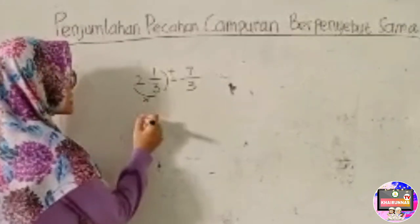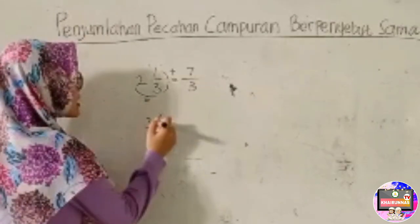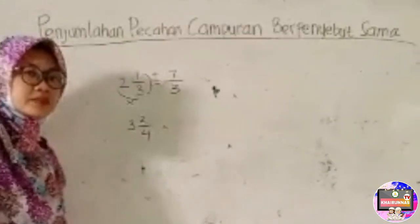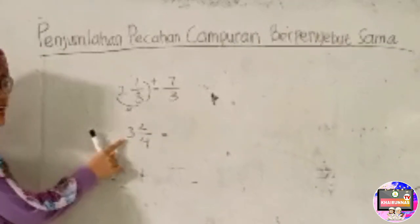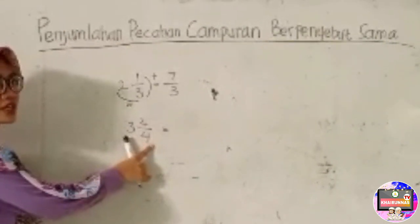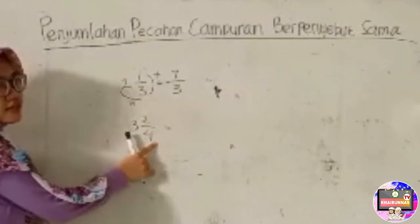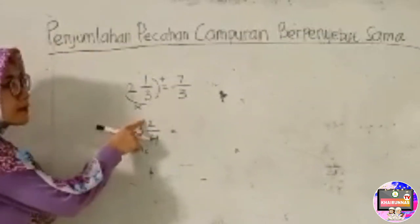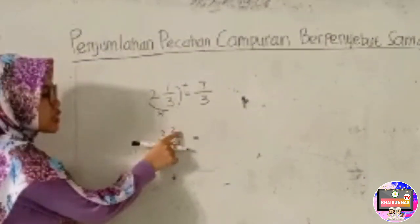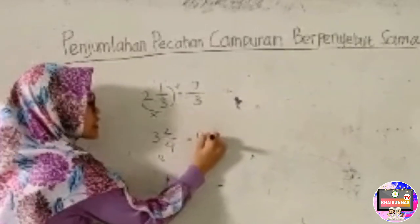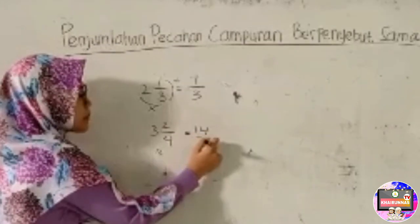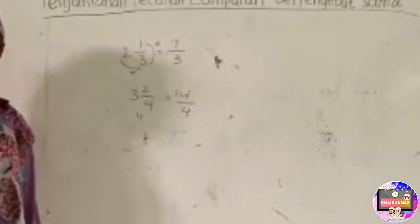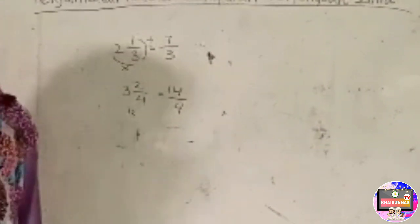Contoh lagi, misalnya 3 2/4. Pecahan campuran kita ubah menjadi pecahan biasa. Ingat, bilangan asli kita kalikan dengan penyebut. 3 kali 4 adalah 12. Setelah itu ditambah dengan pembilang. 12 tambah 2 adalah 14, per 4. Kalau sudah bisa mengubahnya, kita akan mulai bagaimana menjumlahkan pecahan campuran.